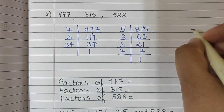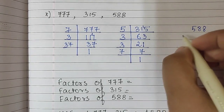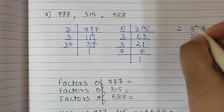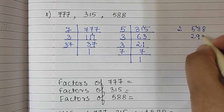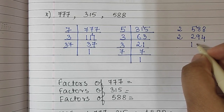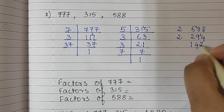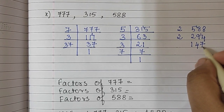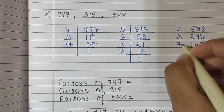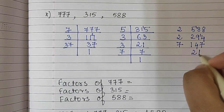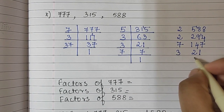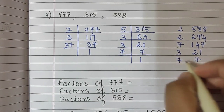And the last number is 588. Even number, so we begin with 2. 2 two-ninety-fours are 588, 2 one-forty-sevens are 294. Now 147 is divisible by 7, so 7 twenty-ones are 147. And 21 is divisible by 3, so 3 sevens are 21, and 7 ones are 7.